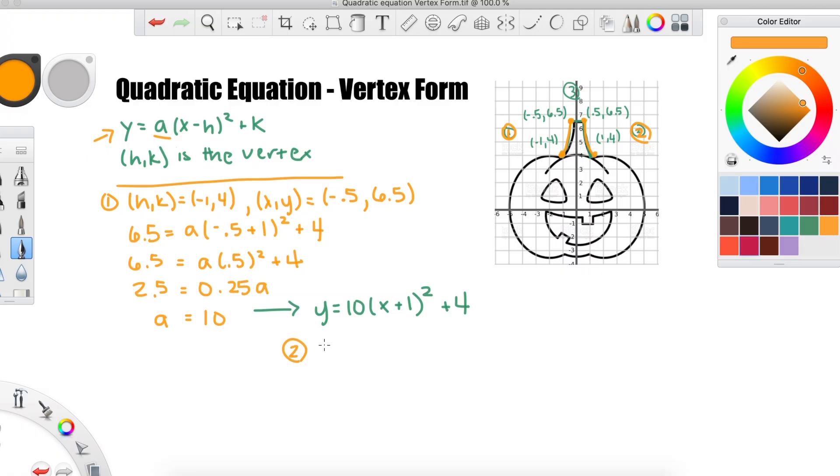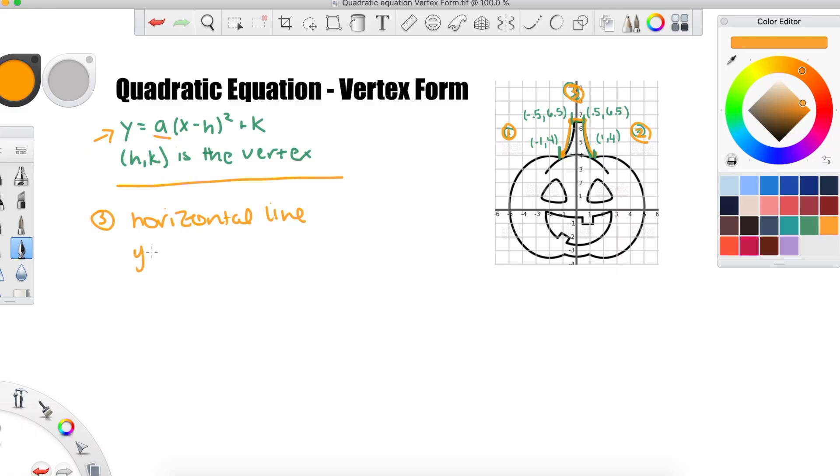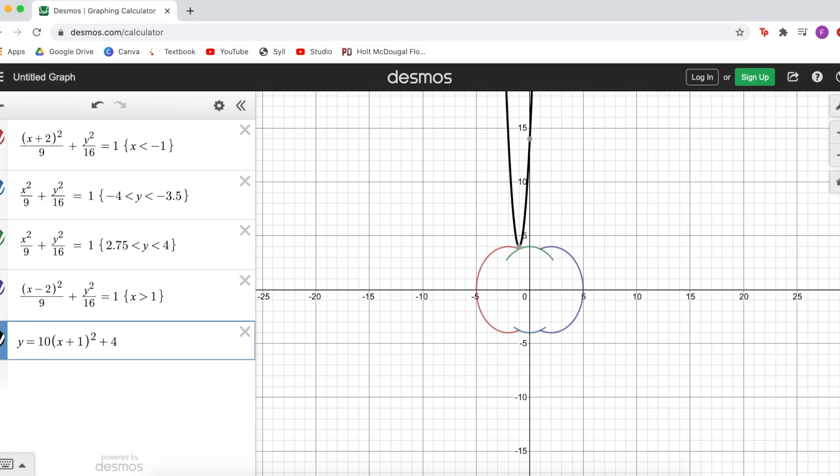For the other side of the stem, we can actually use the same equation, but since it's reflected where everything is the same except the x values are flipped, we can just change the sign in front of the x in the equation and obviously update the domain. Finally, the top is just a horizontal line, y equals 6.5. And again, we'll add in the domain. When we graph it, I feel like the stem really makes a difference and now you can actually tell it's a pumpkin.